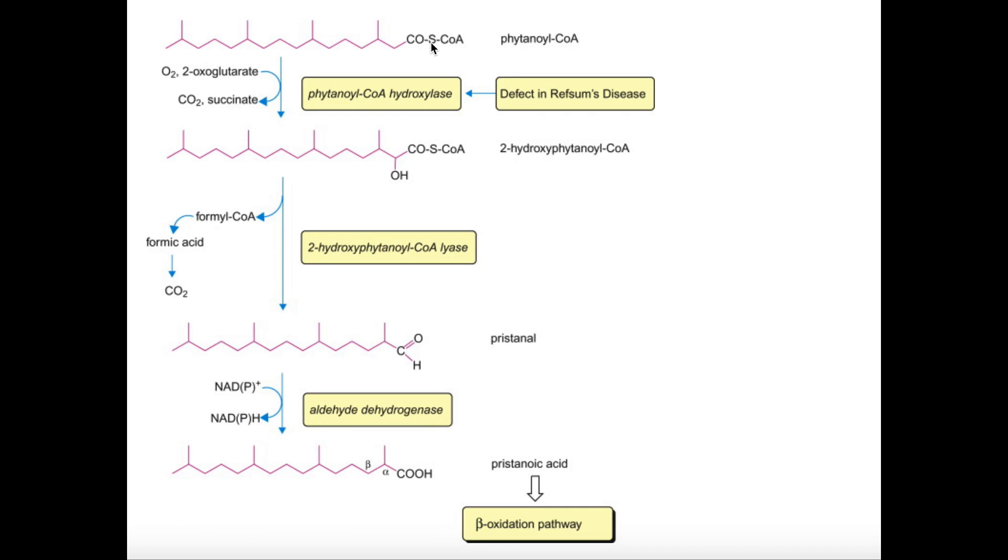So we have to do something to this molecule in order to metabolize it. And what we're essentially going to do is we're going to remove one carbon and we're going to shift the alpha carbon to being the beta carbon. Let me show you how that works. The first enzyme here is what's called phytanoyl-CoA hydroxylase. So what that's going to do is it's going to put a hydroxyl group right here on the alpha carbon. And we see that OH right here. This gets us a molecule called 2-hydroxyphytanoyl-CoA.